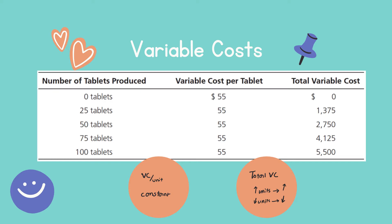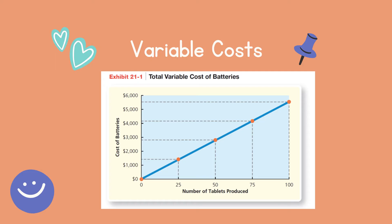In this example we are talking about tablets. Here you have the number of tablets (number of units), here you have the variable cost per tablet, and here you have the total variable cost. With an increase in number of tablets, the variable cost per tablet remains constant. The total variable cost is the number of units multiplied by $55. So with an increase in units, total variable cost also increases. On the graph, when zero units are produced, total variable cost is zero, and it goes up as units increase.